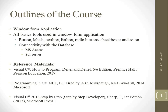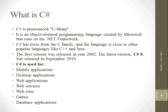What is C-sharp? It is pronounced as C-sharp. It is an object-oriented programming language created by Microsoft and runs on the .NET framework. C-sharp has roots from the C family, and the language is close to other popular languages like C++ and Java. So if you already know C, C++, and Java, learning the syntax of C-sharp will be very easy.